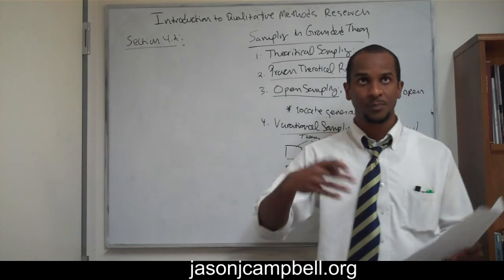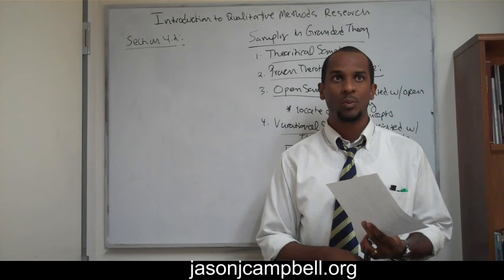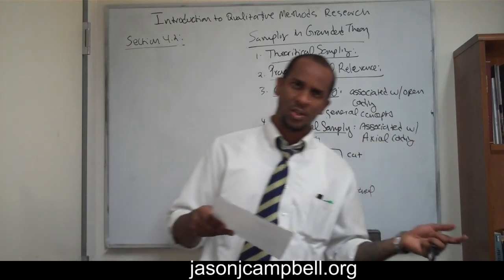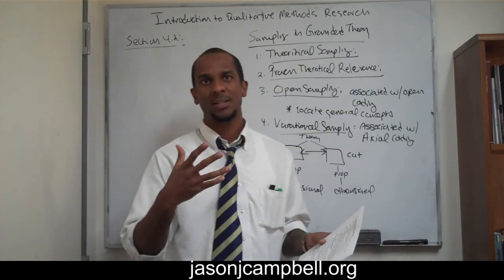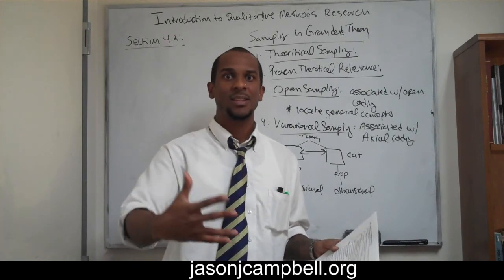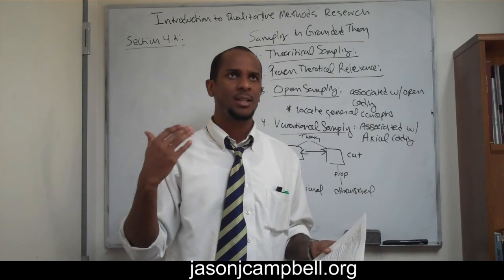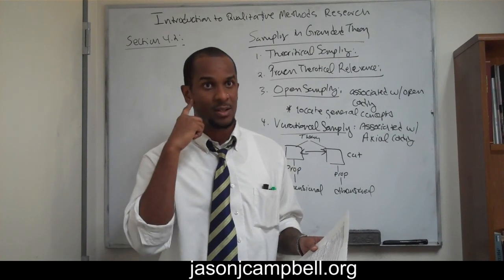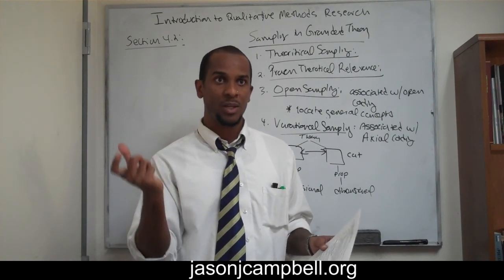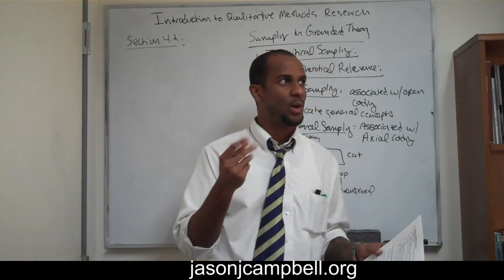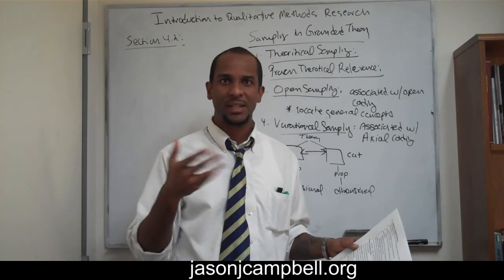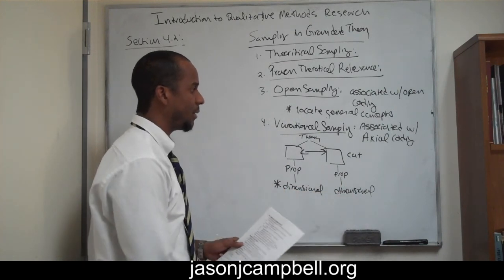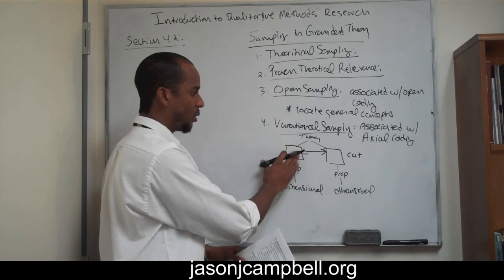We have a theory at the top that we're trying to define as a consequence of our groundedness. The theory is a collection — a nexus of categories. This nexus of categories is related by a nexus of properties, and these properties are connected by a spectrum of gradation. What variational sampling does is to strengthen the dimension. If I'm enacting variational sampling, I would want to know at what point did the peer pressure turn into a threat, or at what point did mental violence change into physical violence. The hierarchical structure of grounded theory is: theories at top, categories are subordinate, properties are subordinate to categories, dimensions are subordinate to properties.